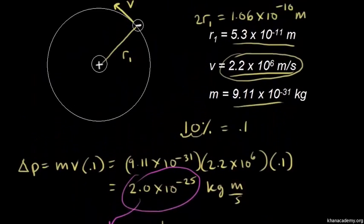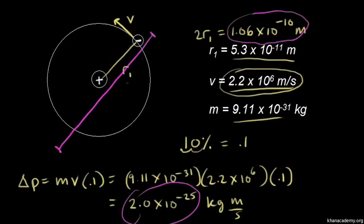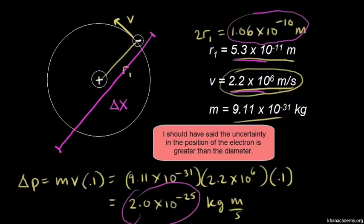That value — 2.6 times 10 to the negative 10 meters — is greater than the diameter of the hydrogen atom according to the Bohr model. So the uncertainty in the position of the electron is greater than the entire diameter of the hydrogen atom. This means the Bohr model is wrong: it claims the electron orbits at a certain radius with a certain velocity, but the uncertainty principle says we can't know the electron's position that precisely. We keep the Bohr model because it's useful as a simple introductory model in chemistry.